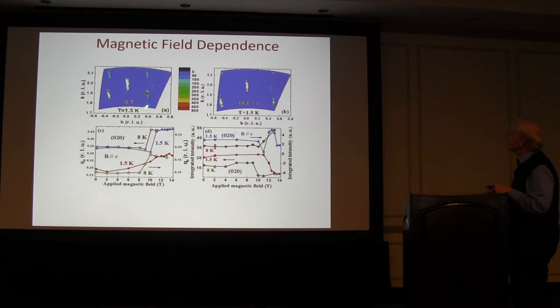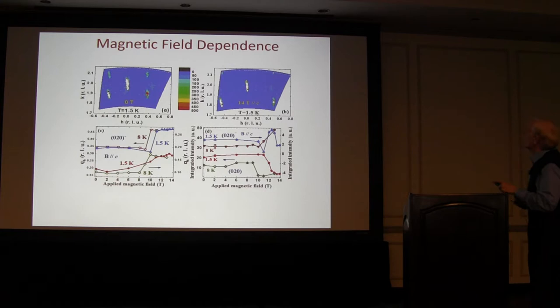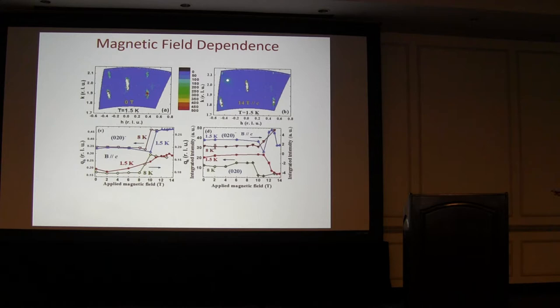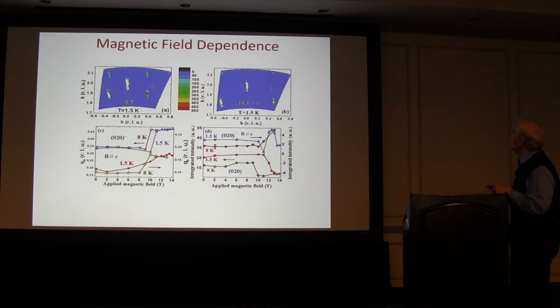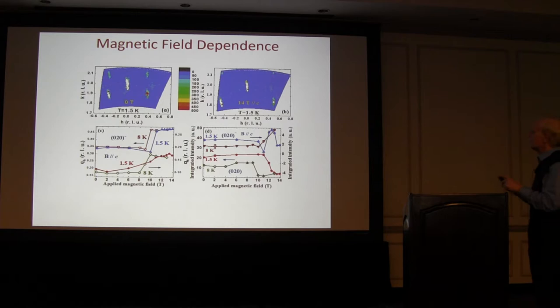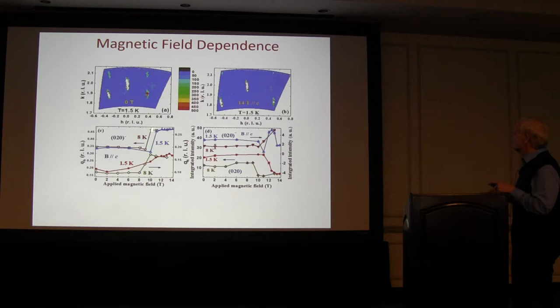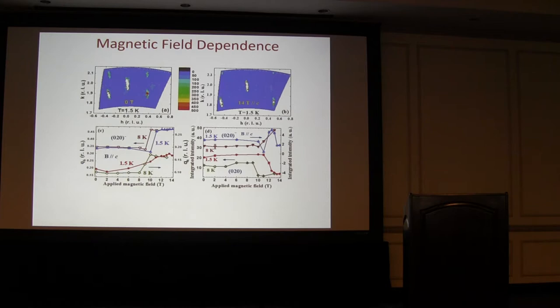Here's the magnetic field effect. In the ground state at 1.5 Kelvin, you have four incommensurate peaks and a commensurate peak. Applying a 14 tesla field, you can see these peaks shift—in fact, two have shifted out of the window of the position-sensitive detector at this particular setting. Looking at the incommensurate peaks as a function of magnetic field, there's a first-order transition around 10 tesla, and also one around 30 tesla seen in bulk magnetization, so there's a spin transition in the incommensurability with magnetic field.